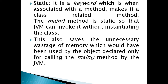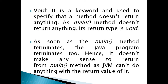Now let us move to the next term, which is void. Void is a keyword used to specify that a method does not return anything. As the main method does not return anything, its return type is void. As soon as the main method terminates, the Java program terminates too, so there is no sense in returning from main — JVM cannot do anything with a return value from it.